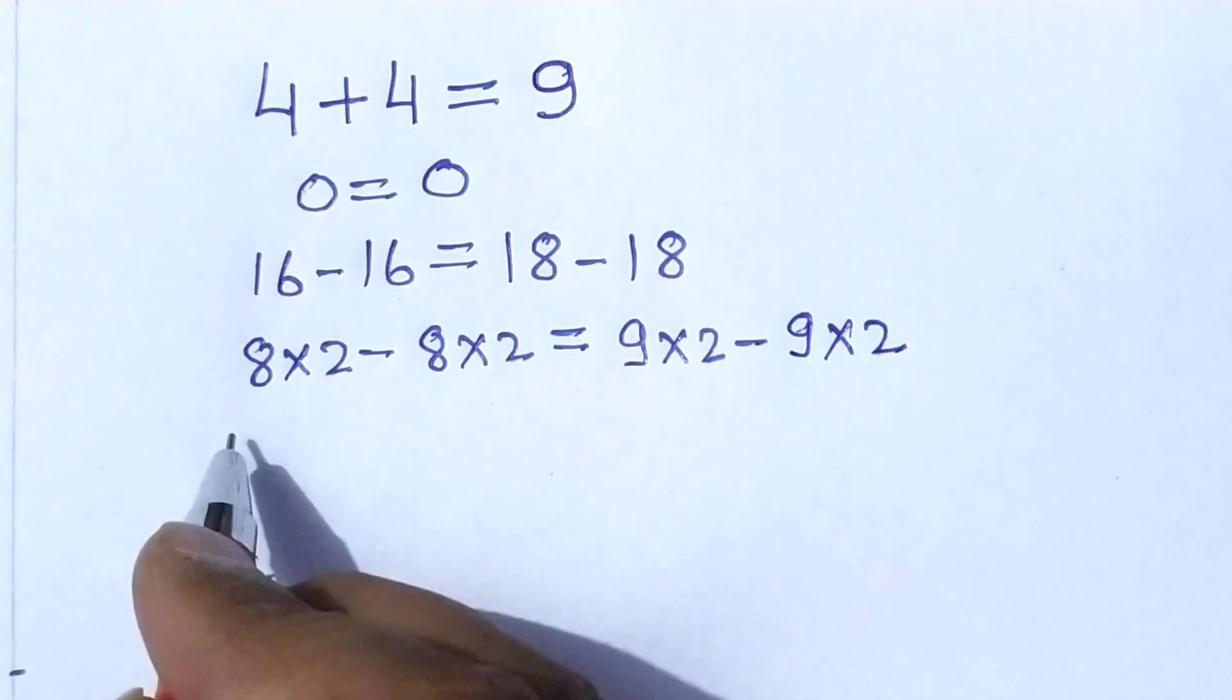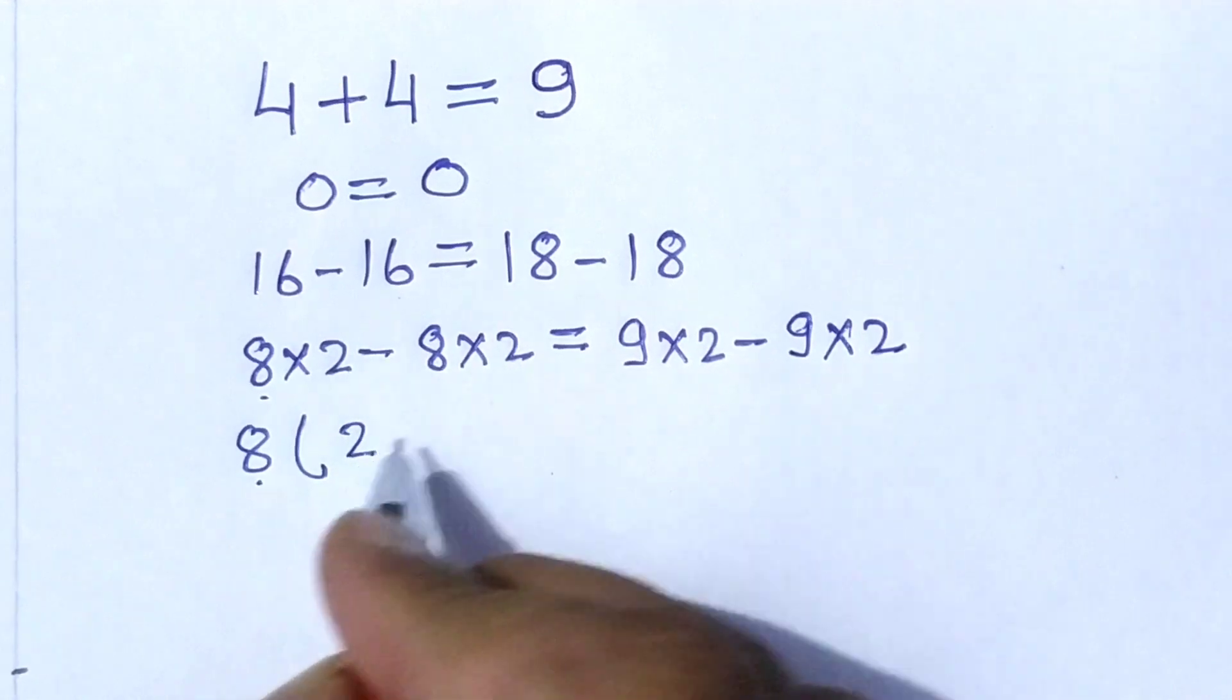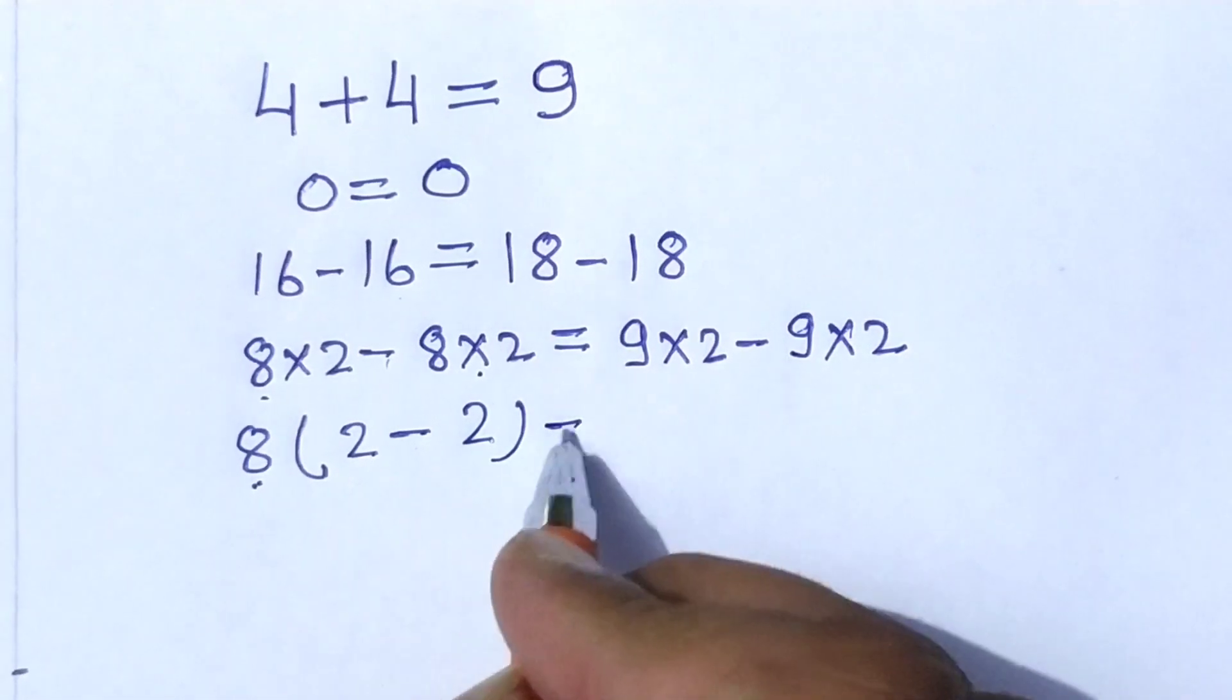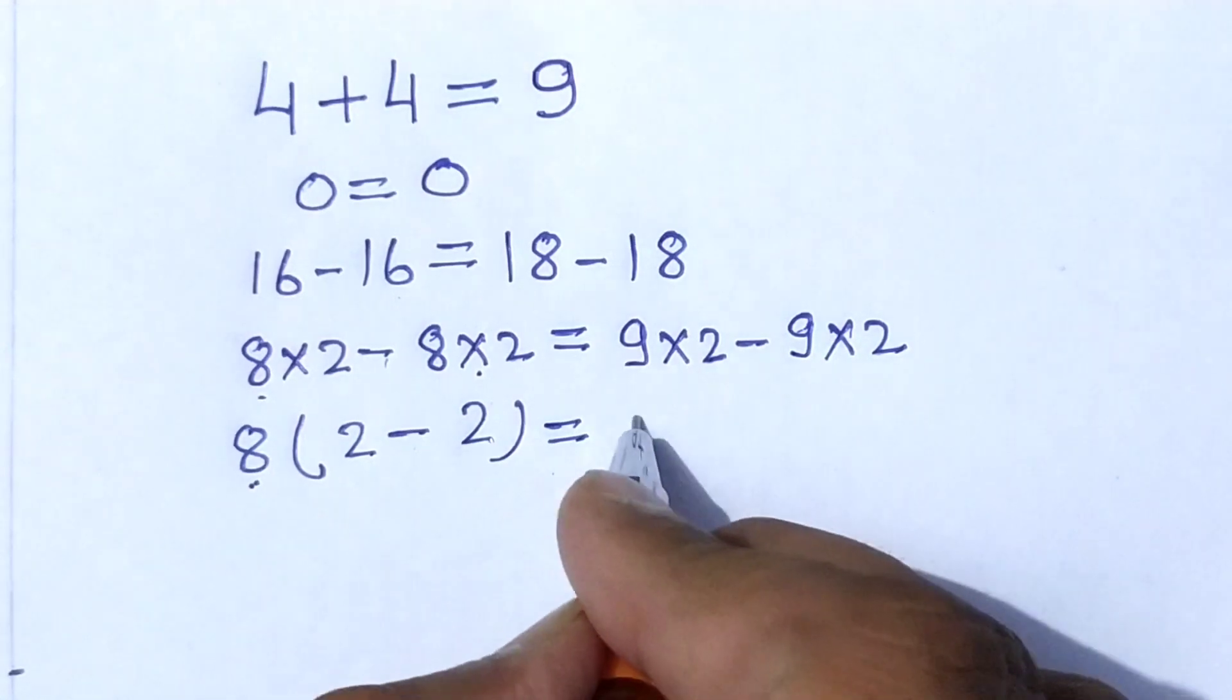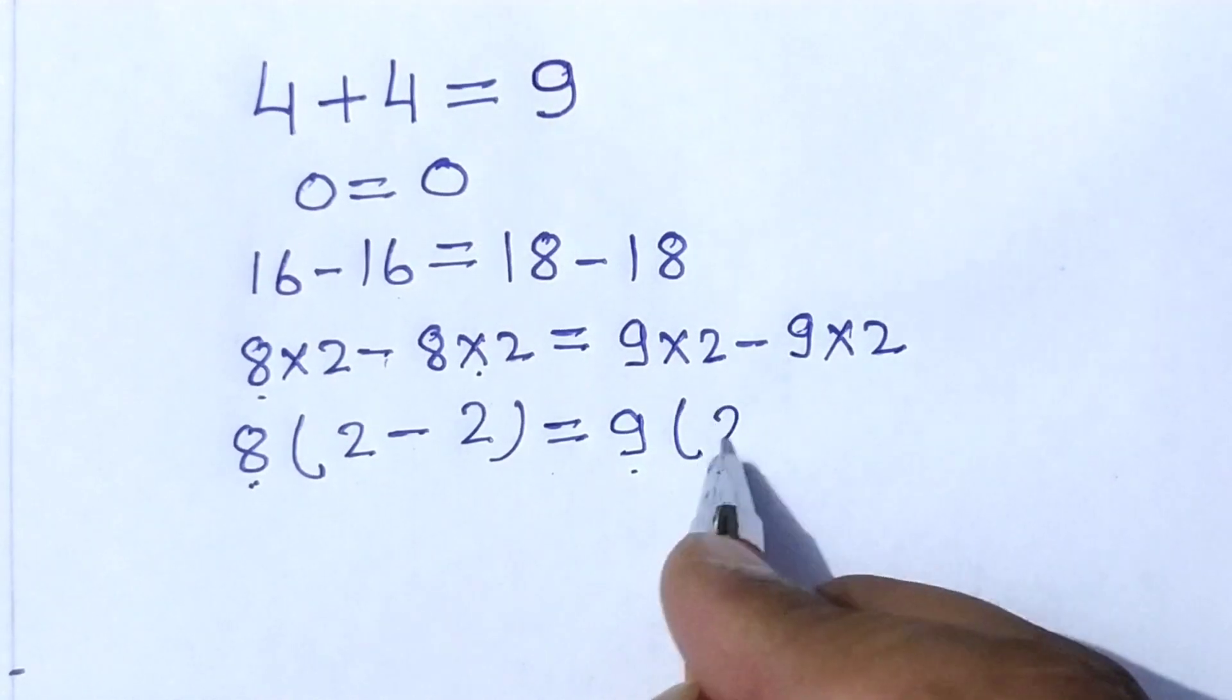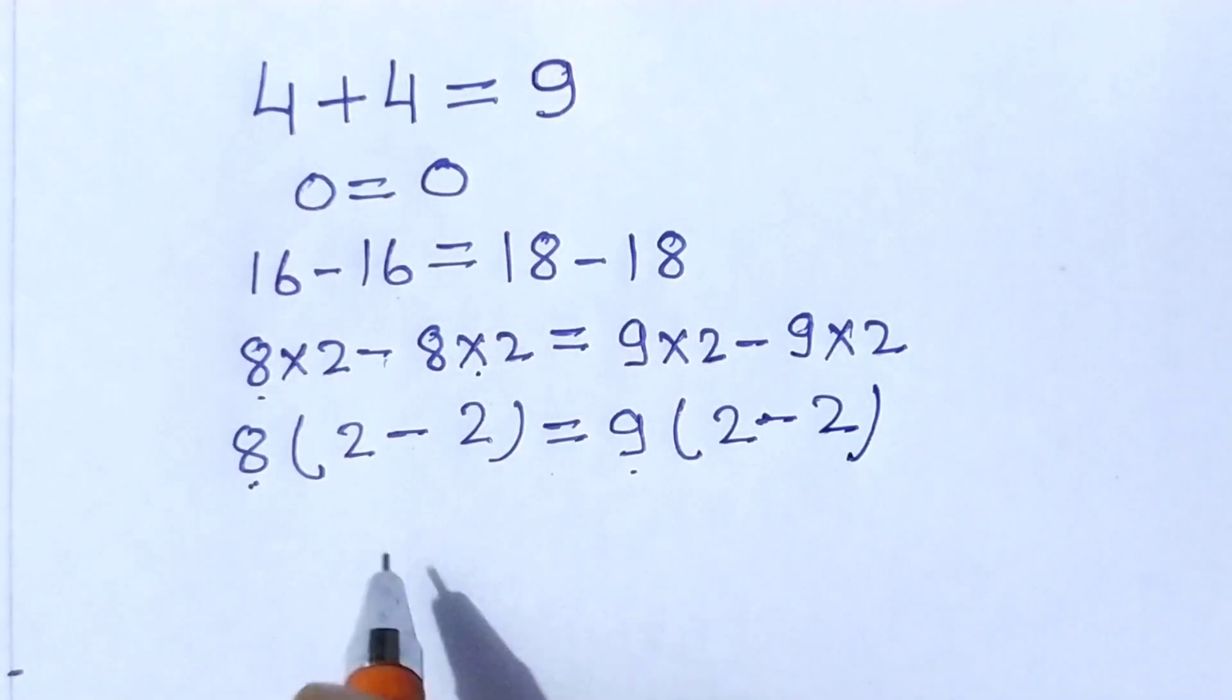Here, take 8 as a common, so that 8 out of this bracket. This divided by this is 2 minus this divided by this is 2 is equal to. Here, take 9 as a common, so that 9 out of this bracket. This divided by this is 2 minus this divided by this is 2.